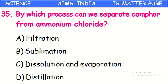By which process can we separate camphor from ammonium chloride? Both components are solids and both are sublimable. We cannot use sublimation because both components would sublime and cannot be separated. So a different technique is needed — dissolution. When this mixture of camphor and ammonium chloride is treated with a proper solvent, one component dissolves and the other is separated by filtration. Then the dissolved component is recovered by evaporation. So dissolution and evaporation are used to separate camphor and ammonium chloride.